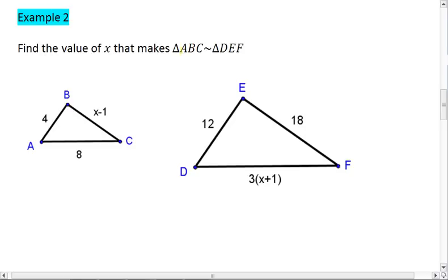I do suggest using highlighters. We know AB corresponds to DE, BC corresponds to EF, which means that AC corresponds to DF.